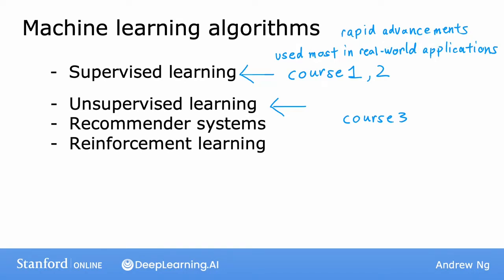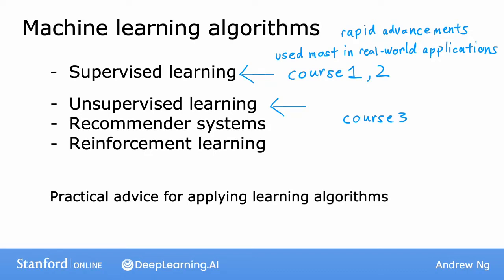By far, the most used types of learning algorithms today are supervised learning, unsupervised learning, and recommender systems. The other thing we're going to spend a lot of time on in this specialization is practical advice for applying learning algorithms. This is something I feel pretty strongly about. Teaching about learning algorithms is like giving someone a set of tools, and equally important — or even more important than making sure you have great tools — is making sure you know how to apply them.